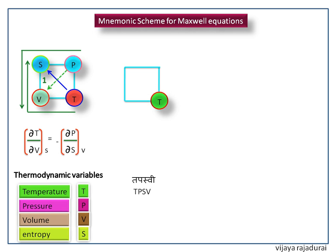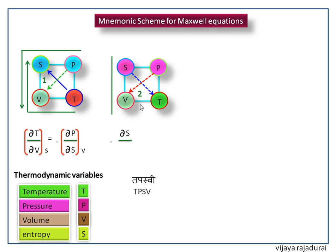Next we write another Maxwell equation. Here we are considering the downside of the square marked as 2. Draw a downward diagonal towards 2. Both the diagonals are in the downward direction so on both sides we get a negative sign. It starts from S to T via V, so the partial derivative of S with respect to V at constant T is equal to...